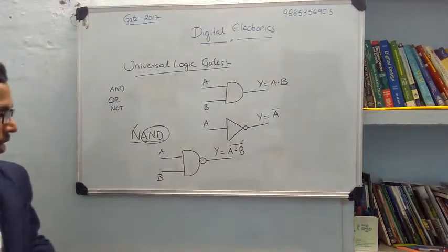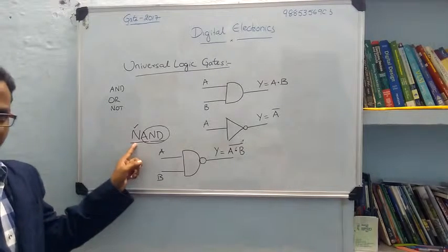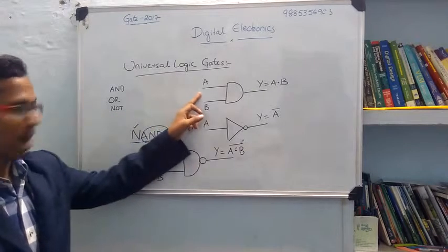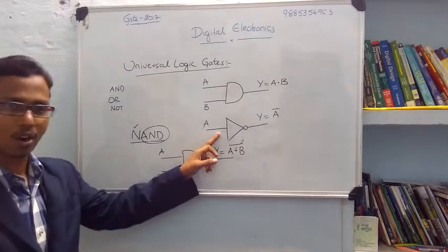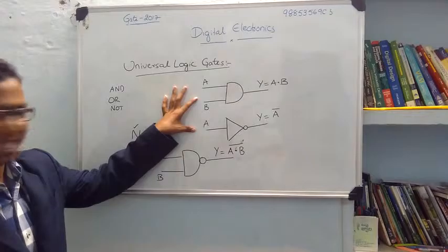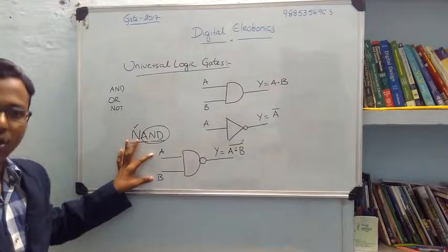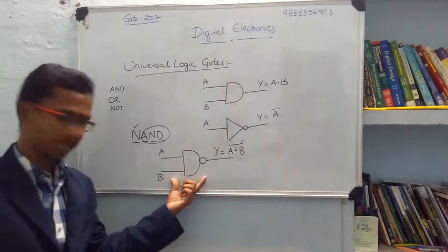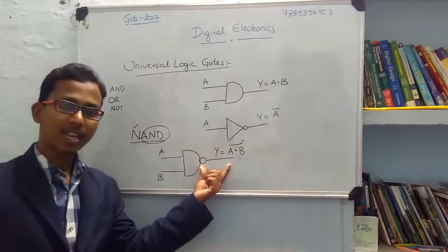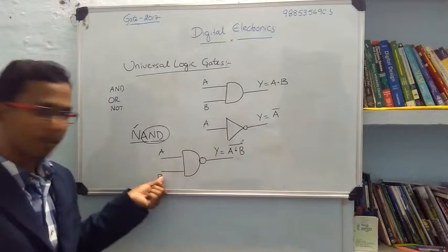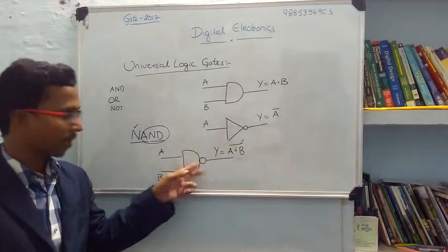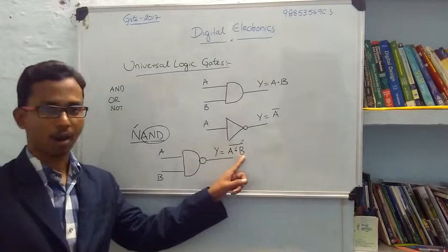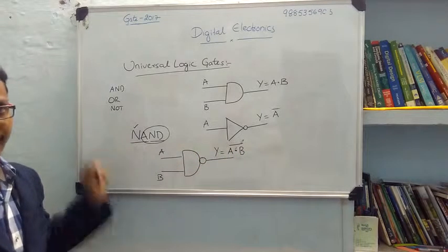Are you understanding? What does NAND gate mean? It is implemented by the AND gate and also the NOT gate. By using these two gates, we are implementing another gate called NAND gate. First we perform the AND operation, then the NOT operation. So A into B is performed first, then complement. That is, Y equals A into B whole bar — that is the NAND gate.